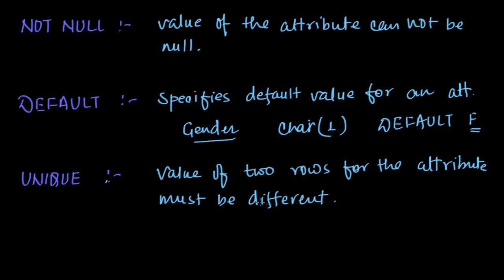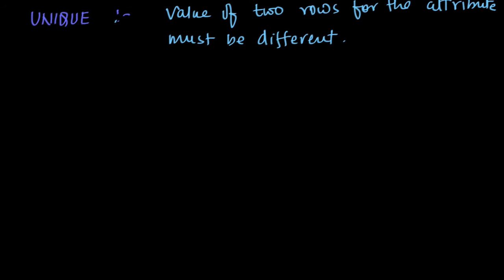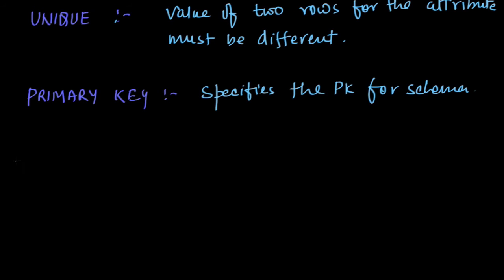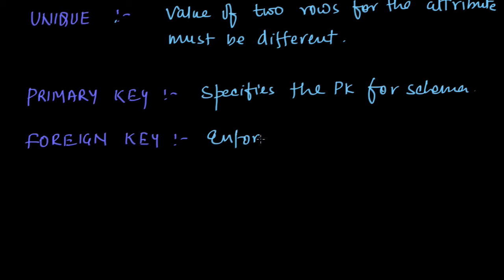The next constraint is PRIMARY KEY. While creating a schema, we can specify which attribute will be the primary key. Primary key specifies that this attribute will be the primary key of the schema. Similarly, we also have FOREIGN KEY, which specifies that this key will be used as a foreign key. This constraint is used to enforce referential integrity.